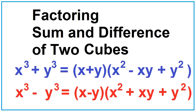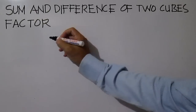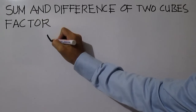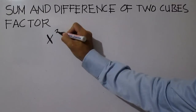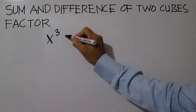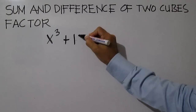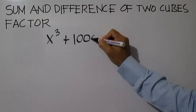Factoring sum and difference of two cubes. Factor x cubed plus 1000.